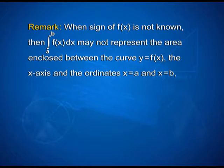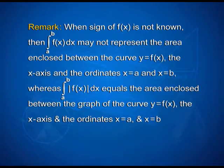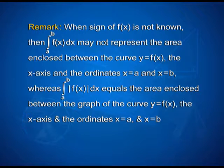Here is an important remark: it may be noted that when the sign of f(x) is not known, then ∫(a to b) f(x) dx may not represent the area enclosed between the curve y = f(x), the x-axis, and the ordinates x = a and x = b. Whereas, ∫(a to b) |f(x)| dx equals the area enclosed between the graph of the curve y = f(x), the x-axis, and the ordinates x = a and x = b.